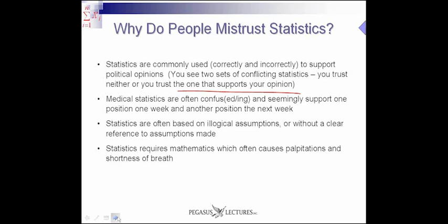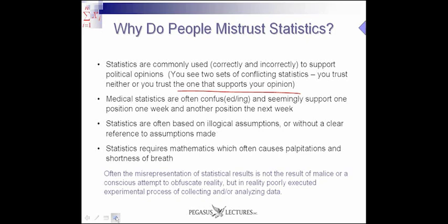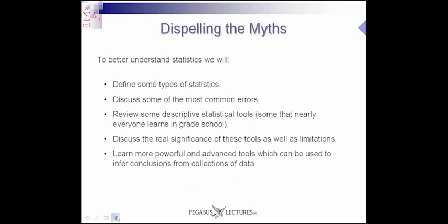And here's another reason. Statistics requires mathematics, which, as we know, often causes palpitations and shortness of breath in many people. So, there are times where there's a misrepresentation of statistical results, but it's not the result of malice or conscious attempt to obfuscate reality. Sometimes, people are really trying to do a good job, but in reality, it's because the experiment was poorly executed, or the process of collecting data or analyzing the data was poor, or even sometimes, it may just be because there's a lack of information. And so, the person could have been completely diligent on everything they possibly could, but there's some information that's not known yet that would have helped make clarity out of the data, and so we end up with spurious results.